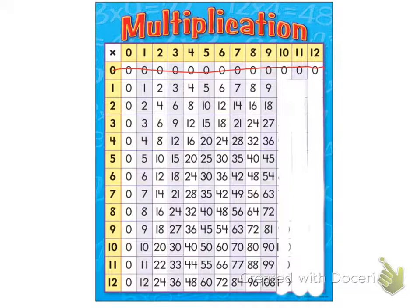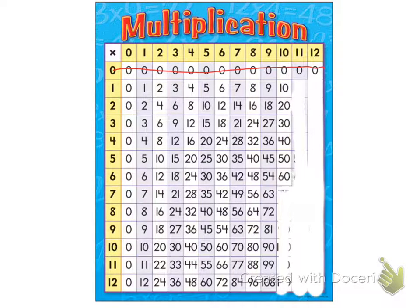And the multiples of ten are ten, twenty, thirty, forty, fifty, sixty, seventy, eighty, ninety, one hundred, one hundred ten, one hundred and twenty.